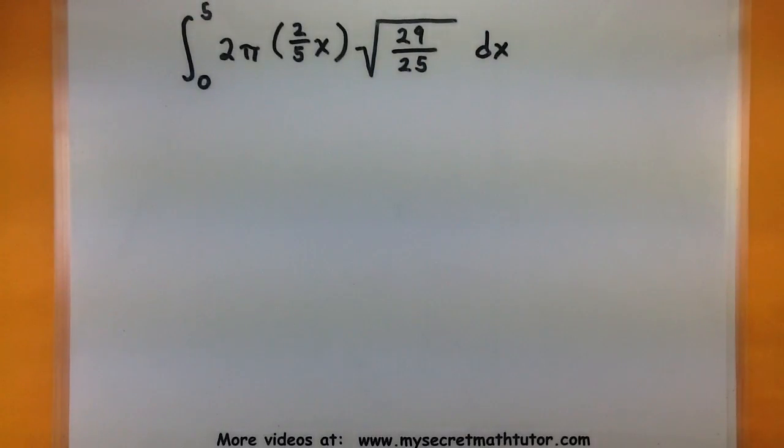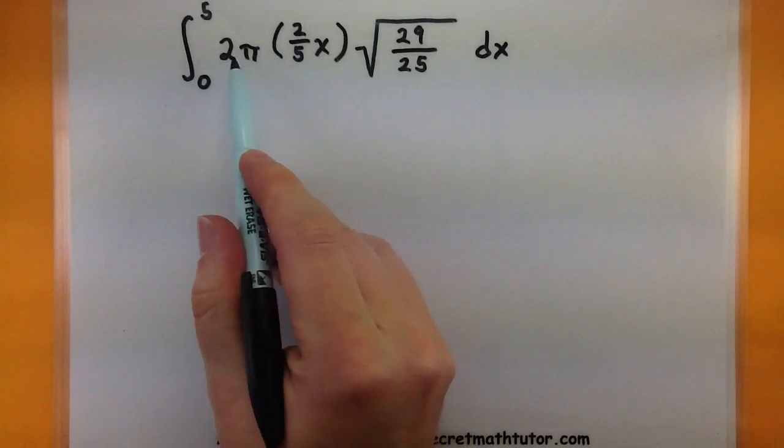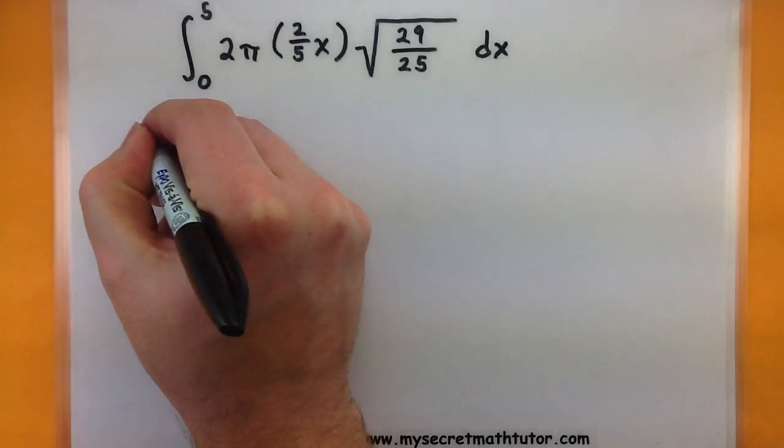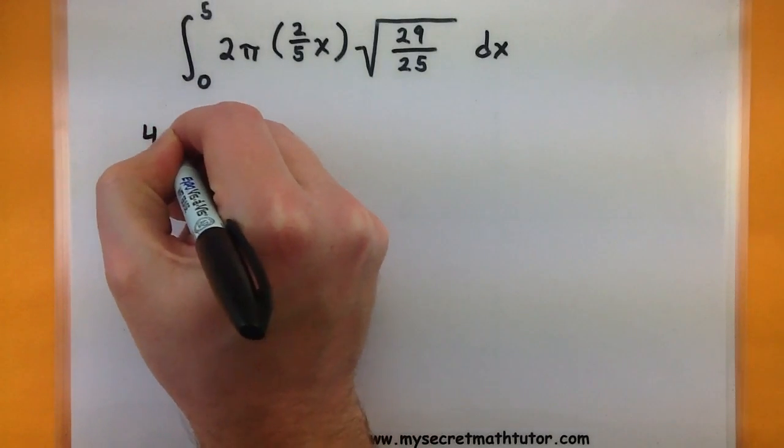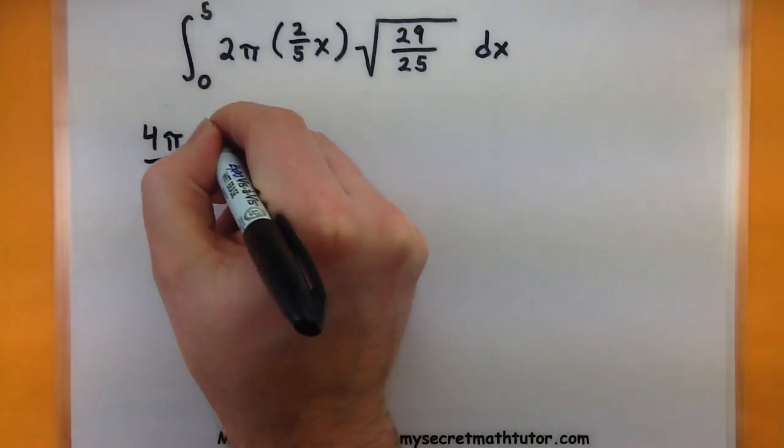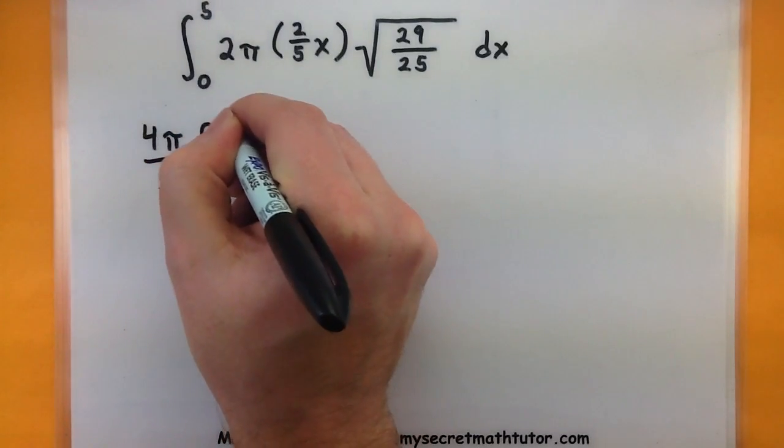So now we just evaluate this integral, and that will give us our surface area. Let's see what we can simplify so far. I could combine my coefficients out here and go ahead and move them outside of my integral. That will definitely make things much easier. So this will give me four π over five. Still working on these bounds here, so zero to five. I've got an x in there.